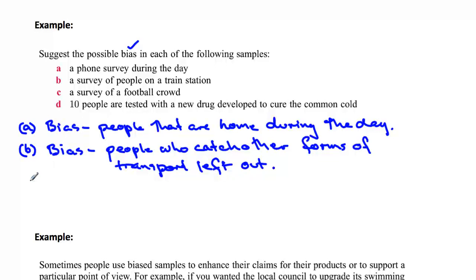That's a very important concept of bias. What about surveying a football crowd? There's a bias in this, and the bias would be that it's only dealing with people who attend football matches. Perhaps there may be more males than females.